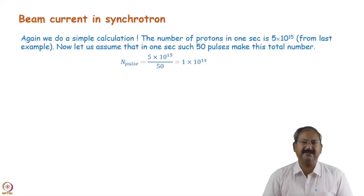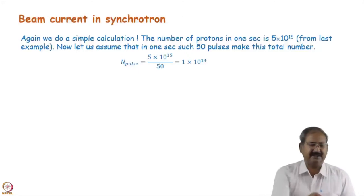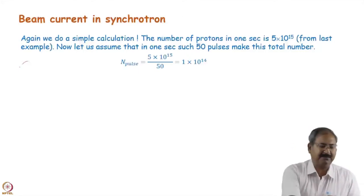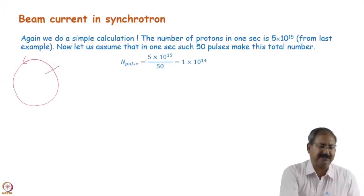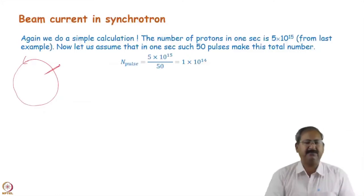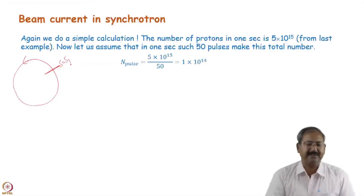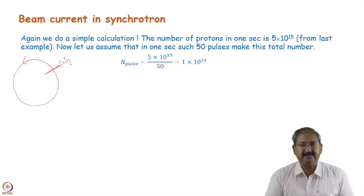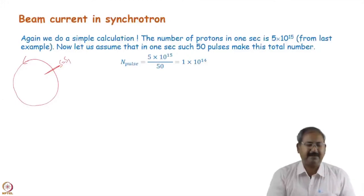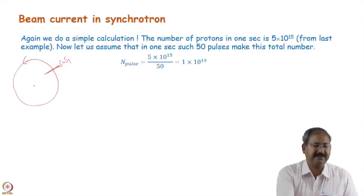The revolution time may be in the microsecond range. So even if one proton is circulating, if we put a detector at its location — suppose this is the orbit of the synchrotron and we put a detector counting the number of protons passing through this point S1 — a single proton can pass through this detector multiple times in one second.